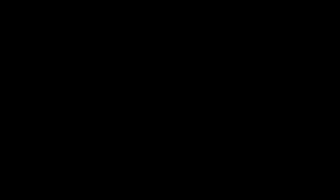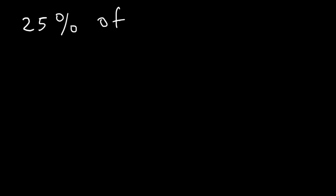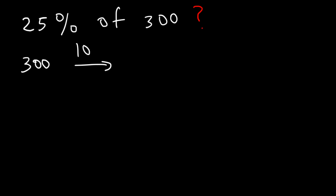Now what is 25% of 300? Go ahead and take a minute, pause the video, work on this example, and then unpause it to see if you have the right answer. Let's start with 10% of 300 — 10% of 300 is simply 30; just move the decimal one unit left or take off a zero.